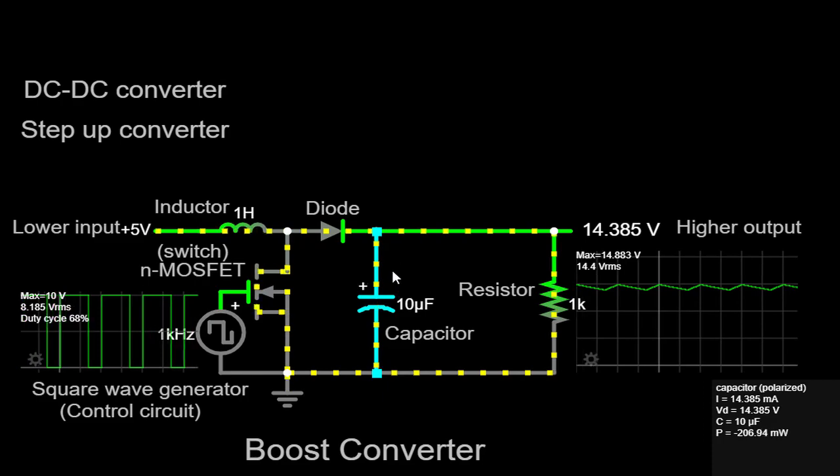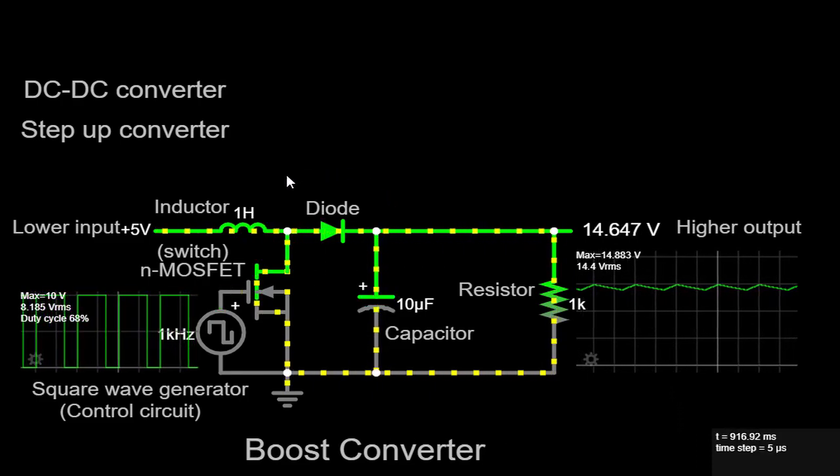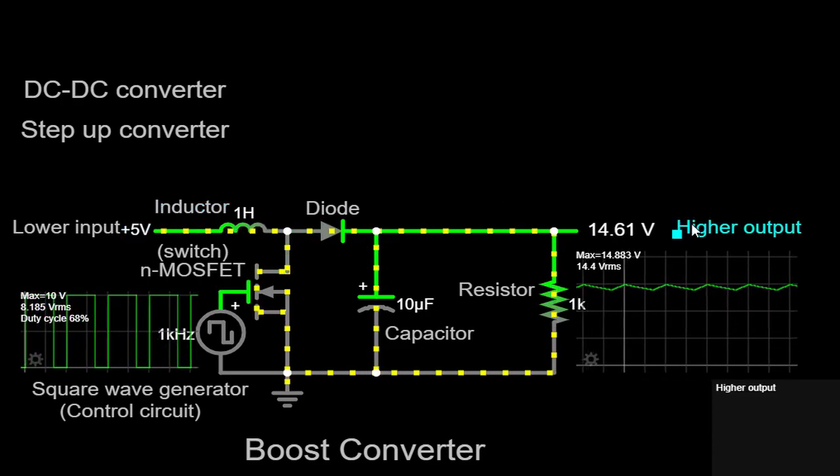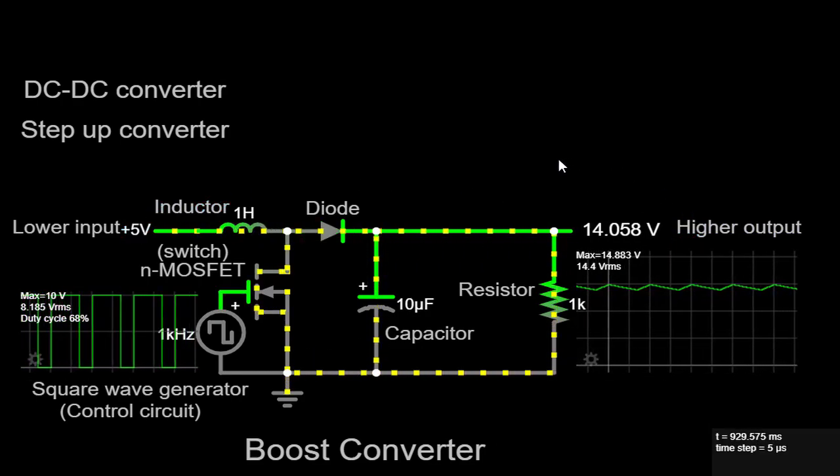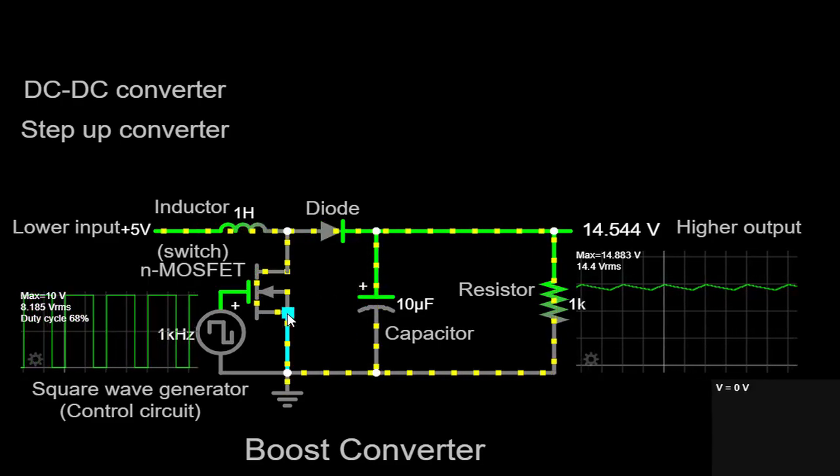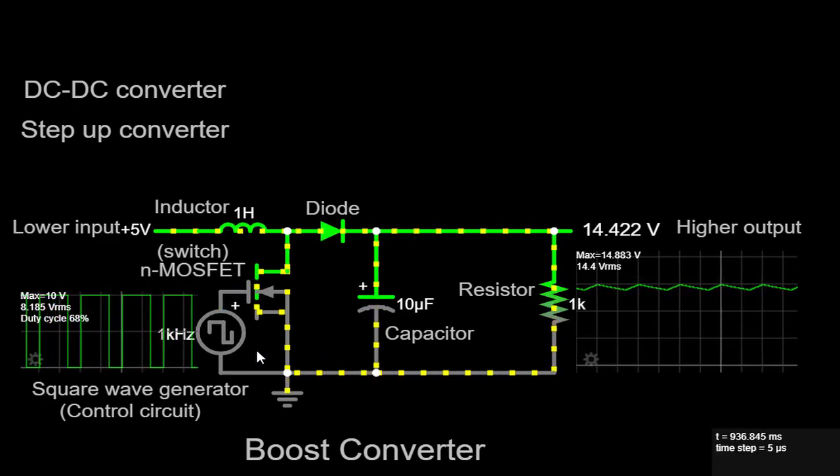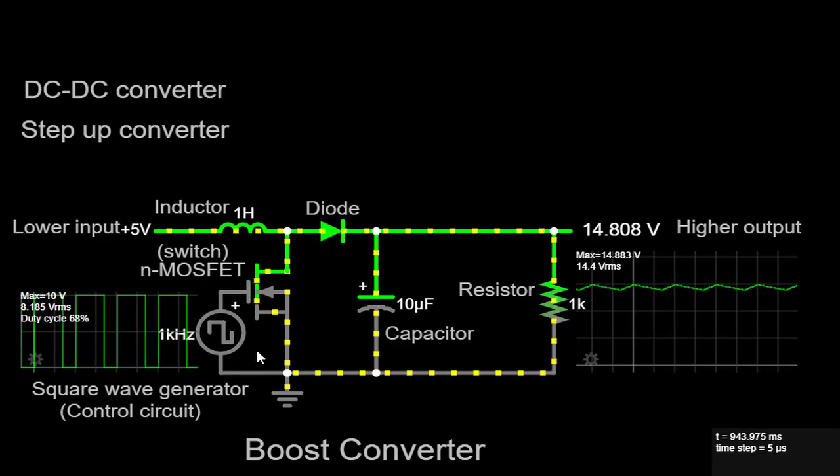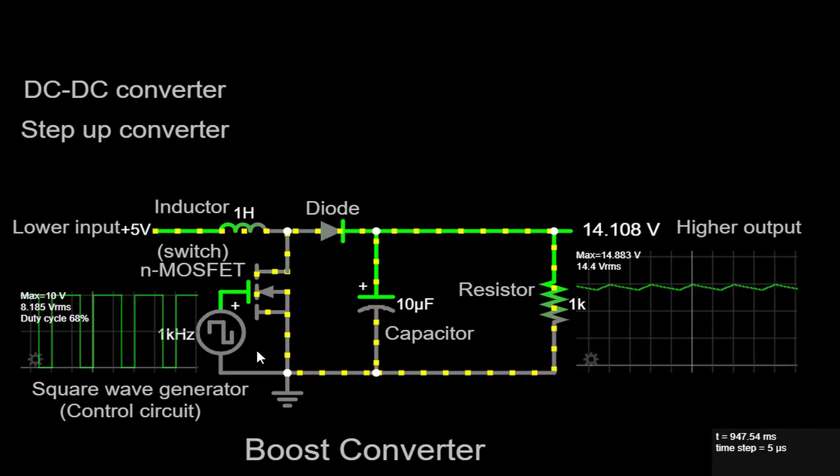The boost converter can be used to increase the voltage level from a low input voltage source, such as a battery, to a higher output voltage required for various applications. It is commonly used in electronic devices, power supplies, battery chargers, and renewable energy systems where the input voltage may vary or be lower than the desired output voltage.